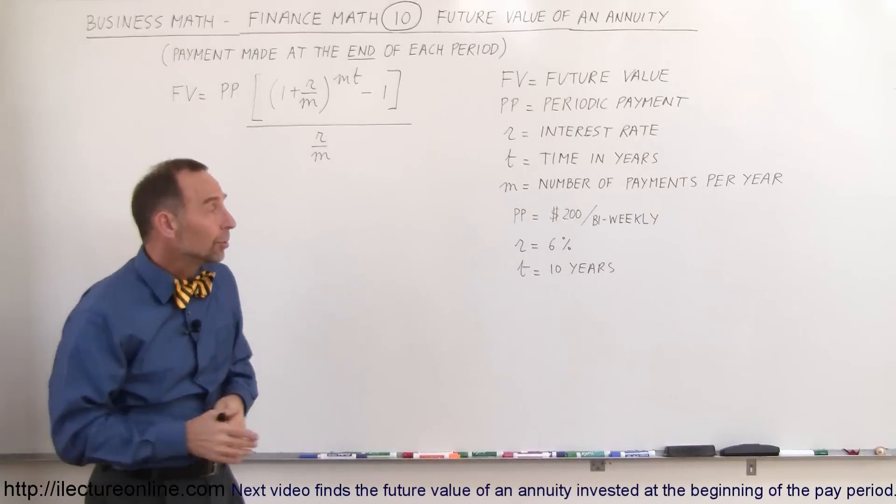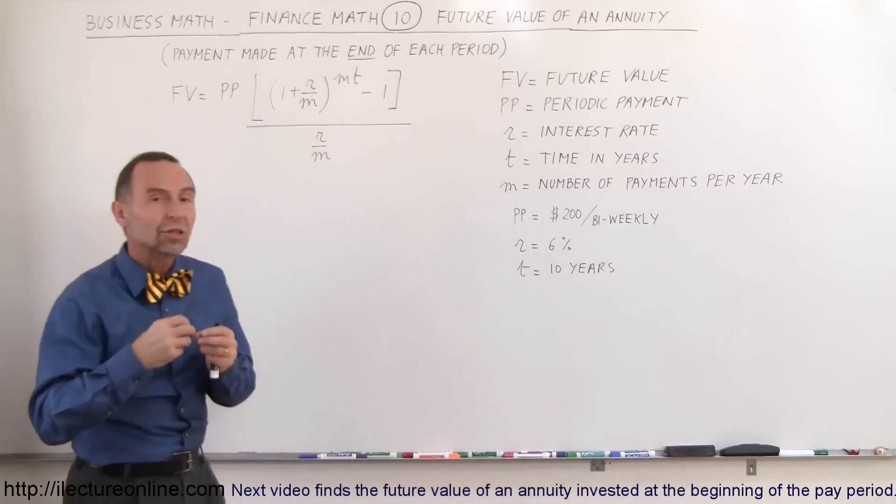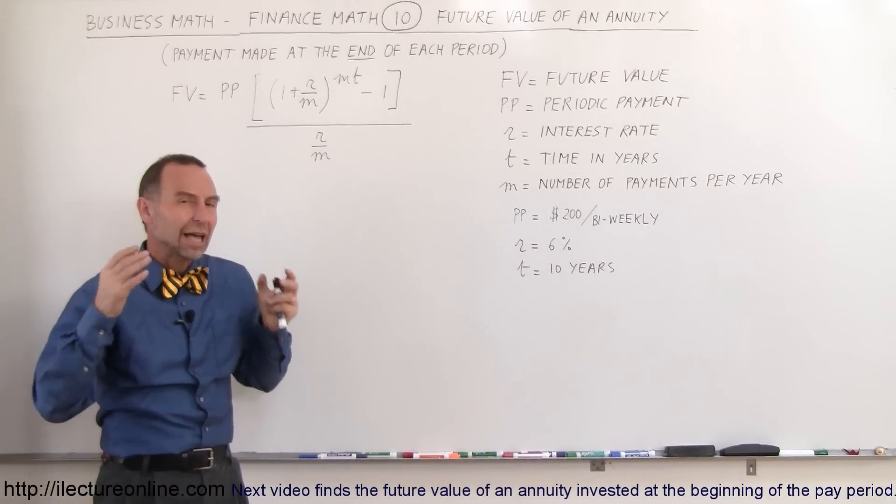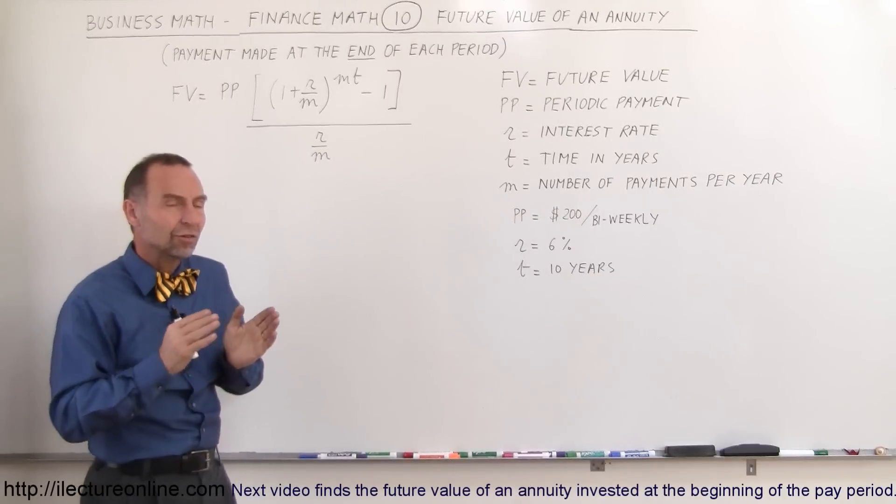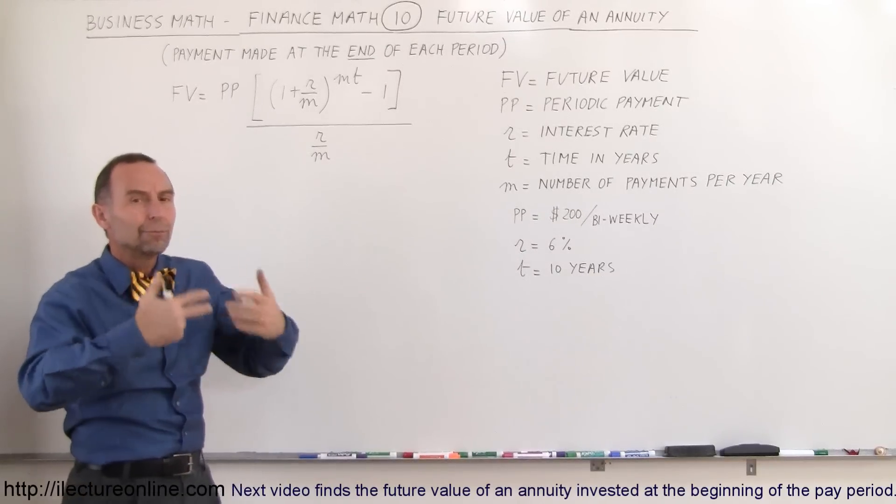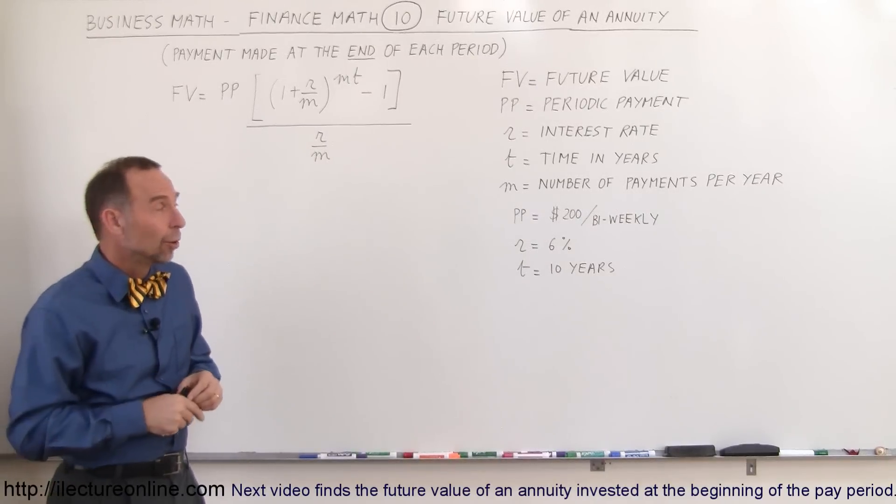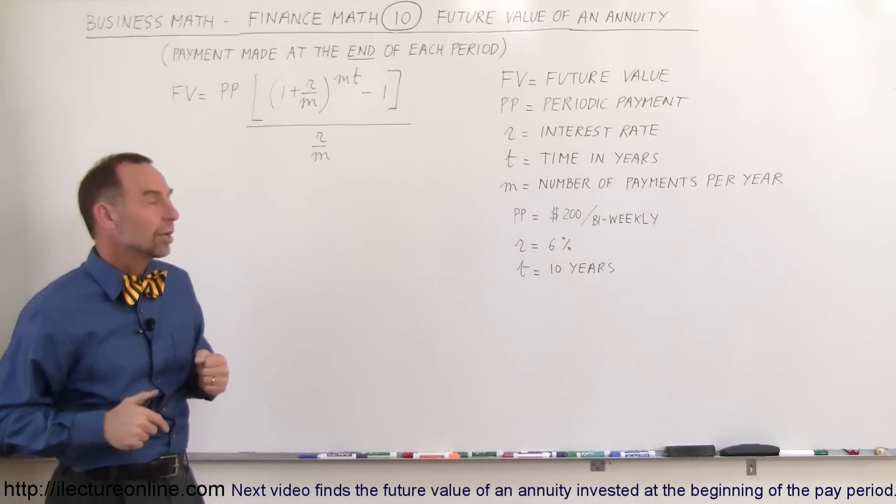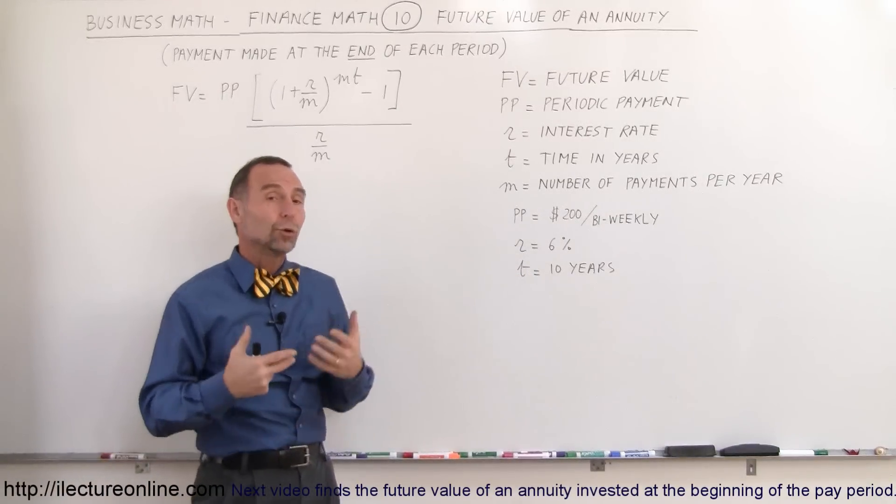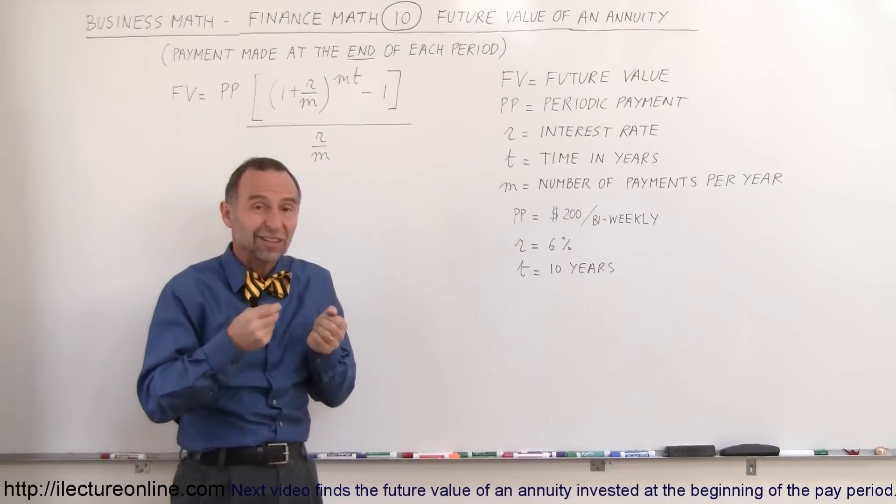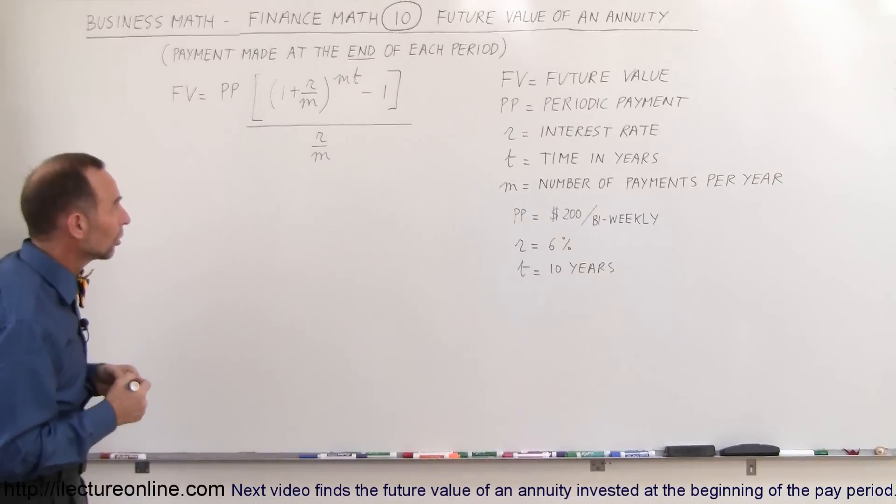And then let's say in our example, the periodic payment is $200 bi-weekly. So we're allowing them to take $200 out of our paycheck every two weeks. That may seem like a lot, but it's a good thing to do if you can do without it, because it's a nice savings account, and it'll build up money in the future. We're going to just make it a 10-year period, and let's say that we can earn 6% interest. If we invest it in the right things, 6% is definitely realistic in today's world.